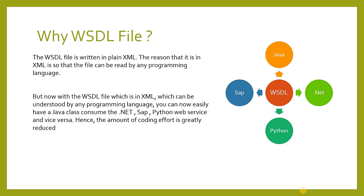So let's move on to our next topic — why Wisdel file? A Wisdel file, as I explained, is nothing but a plain XML standard document. The reason it is in XML is so that the file can be read by any programming language. Suppose we have four applications developed on different platforms: Java, SAP, Python, and .NET. As Wisdel is an XML document, it can be understood by Java, SAP, Python, and .NET. So a single web service can be consumed by all applications developed on different platforms, and hence the amount of coding effort is greatly reduced with the help of a Wisdel file.